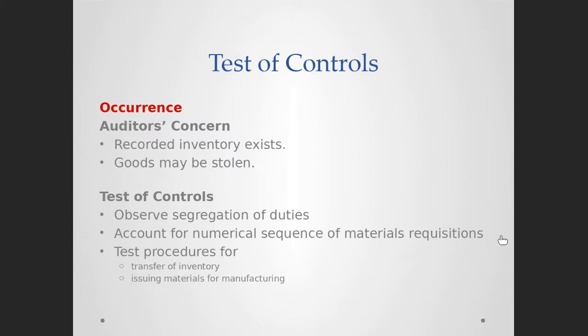We want to make sure the client accounts for every single materials requisition document — they are numbered with a sequence, and we want to make sure nothing is missing. This ensures all inventory is accounted for, because inventory during transfer has a higher possibility of being misplaced or stolen. We want to know the procedure for transferring inventory from the warehouse to the factory and the process of issuing materials for manufacturing, so that items are not misplaced or stolen.